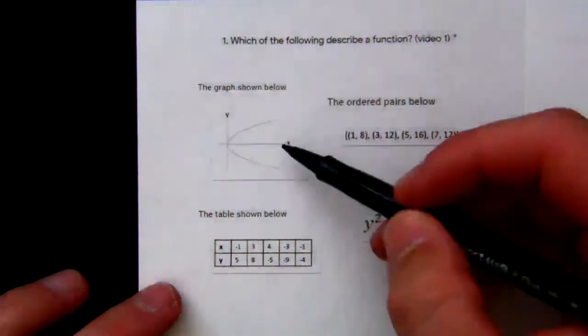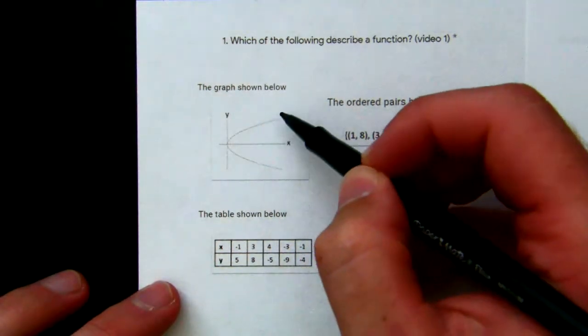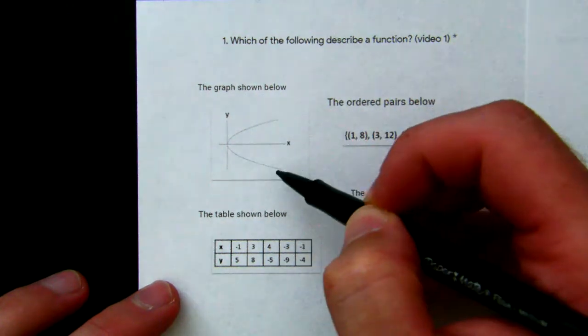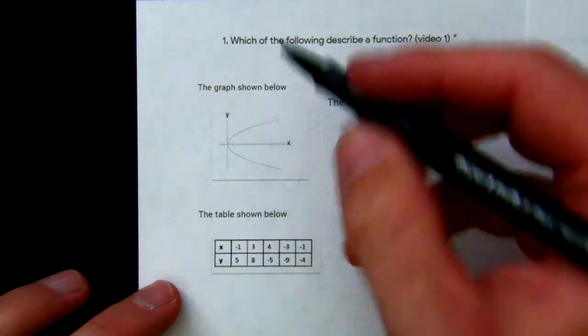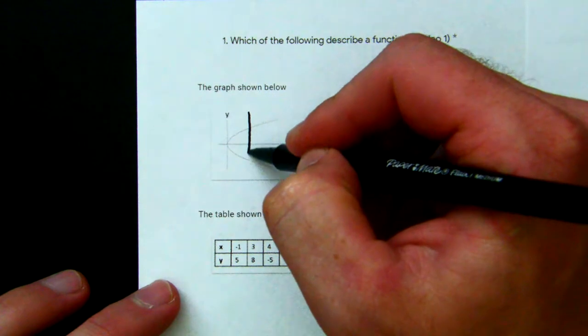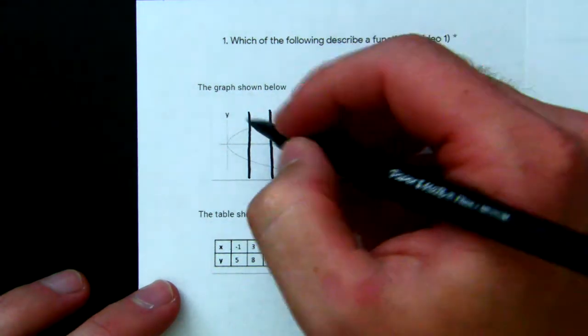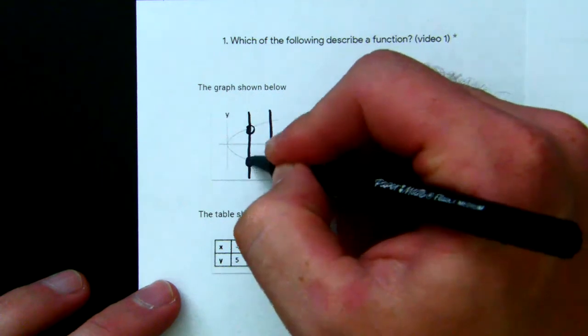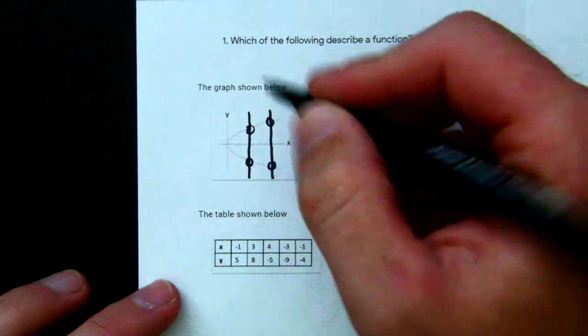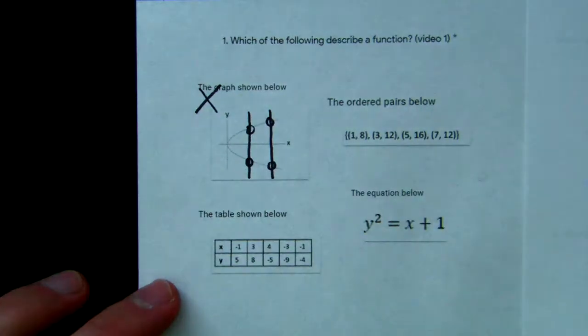If we look at this graph here, we have a curved shape to the right. The way we test for a function is using a vertical line test. In order for it to be a function, a vertical line can only hit the graph in one spot. But if we look at these lines here, the vertical lines hit in more than one spot, so we know the graph is not a function.